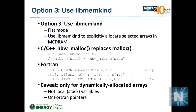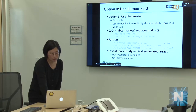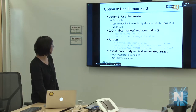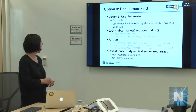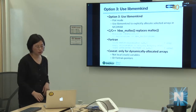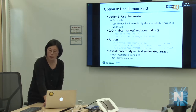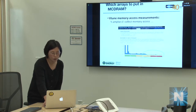If your application exceeds 16 GB and you want to selectively place only the largest arrays in MCDRAM, use HBW_malloc to replace malloc in C code. For Fortran, the Cray compiler provides a 'memory_bandwidth' directive, and Intel uses the 'attributes fast_mem' directive on array declarations. Note these only work for dynamically allocated variables, not stack variables.